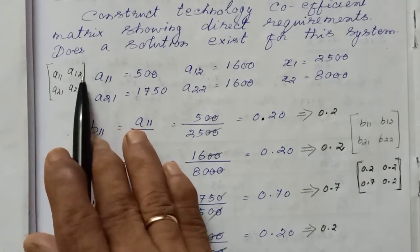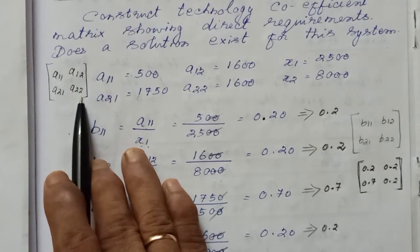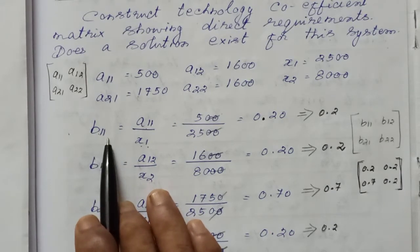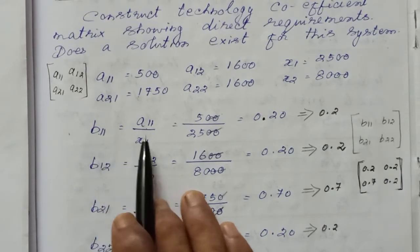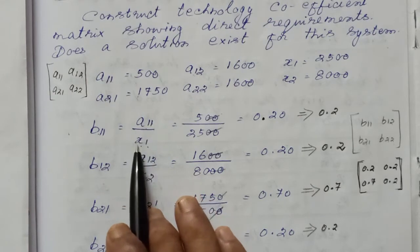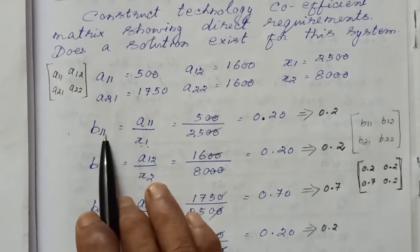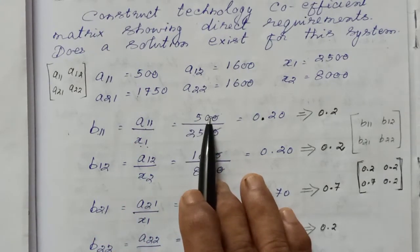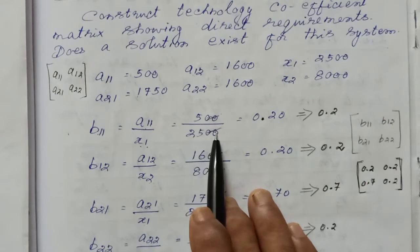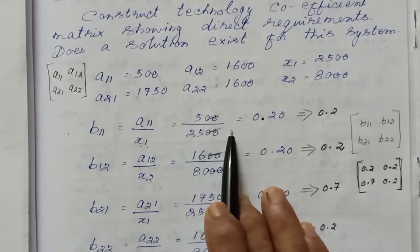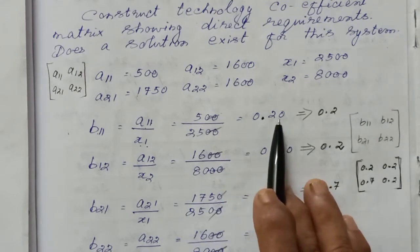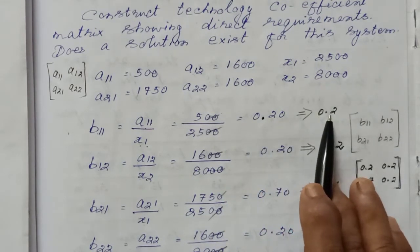Now let's compute the technology matrix elements: a11, a21, a22. For the 1st row, 1st column: A11 divided by x1. A11 is 500, divided by 2,500. That gives 5 by 25, which equals 0.20.